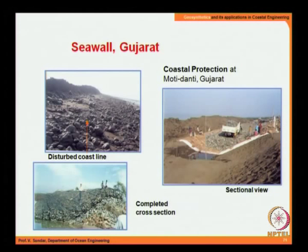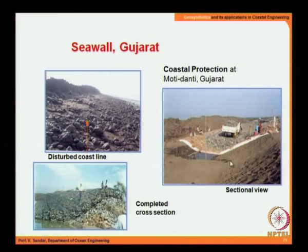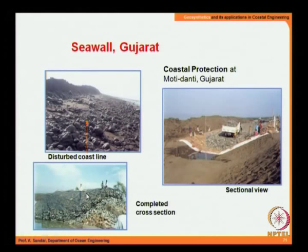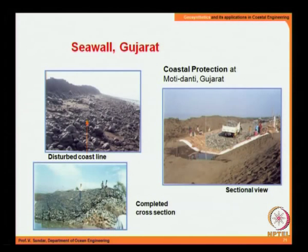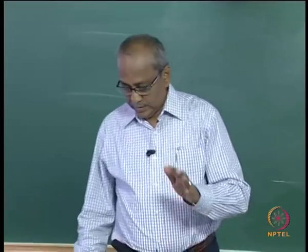In Gujarat, the disturbed shore line is shown. Now you see the geotextile — the sectional view and the complete cross-section are shown. This is the final protected condition — it is understood to be intact, and this is where I will stop.